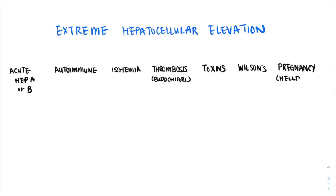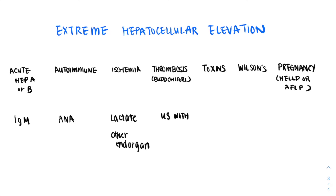Pregnancy-related causes can include HELLP syndrome or acute fatty liver of pregnancy. To investigate, you could order IgM levels for hepatitis; ANA, anti-mitochondrial, and anti-smooth muscle antibodies for autoimmune etiologies; lactate or evidence of end-organ damage for shock liver; Doppler ultrasound to assess the venous system; Tylenol level for toxins; ceruloplasmin for Wilson's disease; and beta-hCG for assessment of pregnancy. After today, I hope we're able to recognize different patterns of liver enzyme elevation and develop an approach to hepatocellular transaminitis.